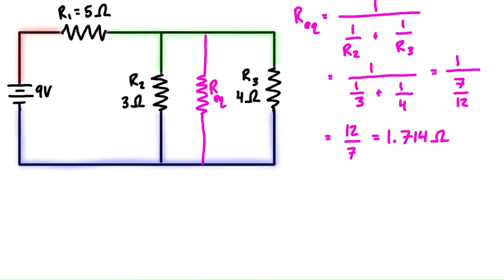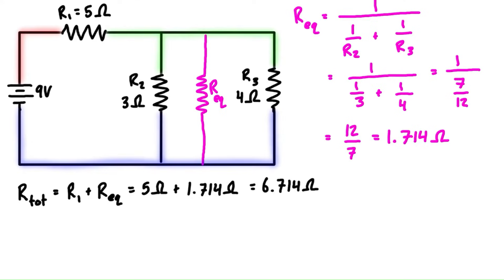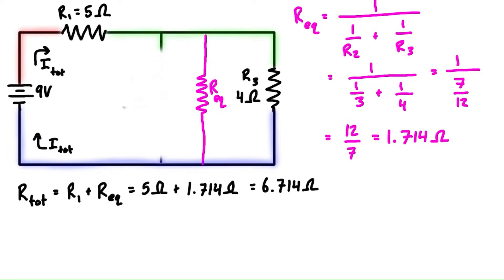When we think about the equivalent resistance, that's like just getting rid of this branch and this branch and basically leaving us with a series circuit. So the total resistance of the series circuit is just R1 plus R equivalent, which is 6.714 ohms. This would be the total current moving through the circuit if we imagine these branches are gone and we're just dealing with the equivalent resistor.